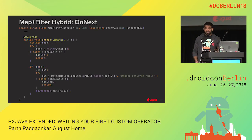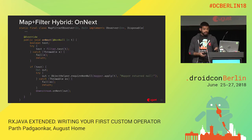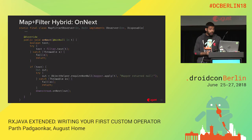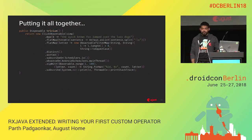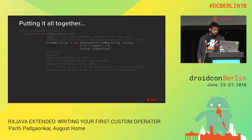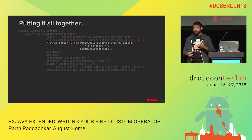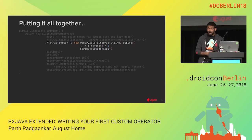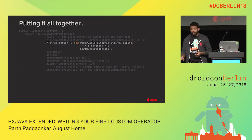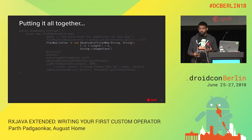Here's the onNext block. We take a filter, test the item we're getting from upstream, and if it passes our test, we map it. True to RxJava 2, we don't allow nulls anywhere — if we get a null, we complain very loudly. When we get our mapped value, we hand it to the downstream. Putting it all together, we have our click observer starting the stream and our custom FilterMap operator used with flatMap. There are different ways to use custom operators — you can also look up the compose and lift operators for different interfaces.